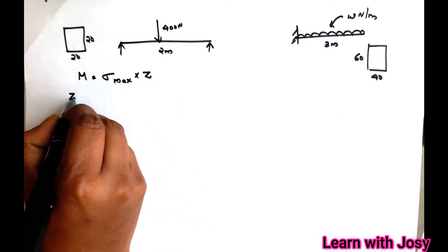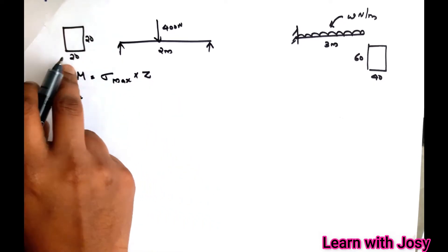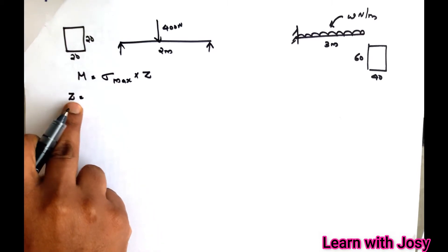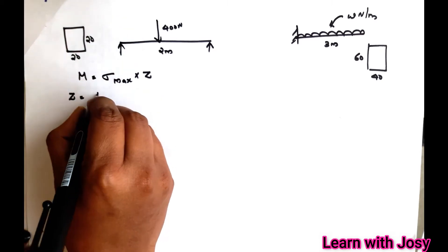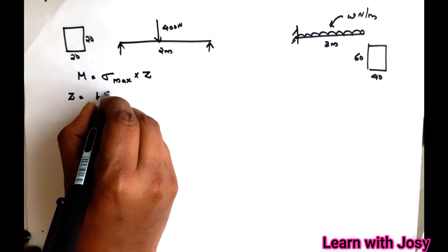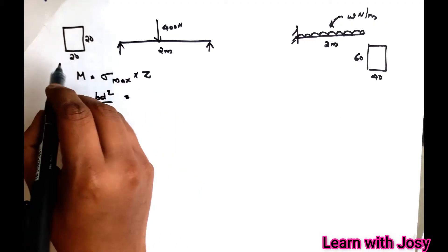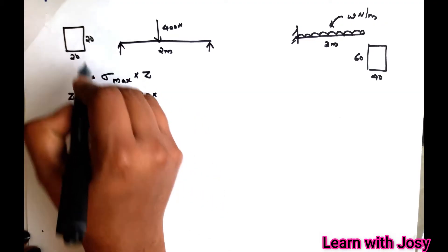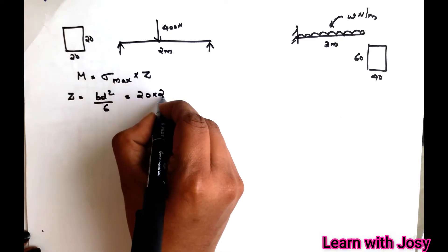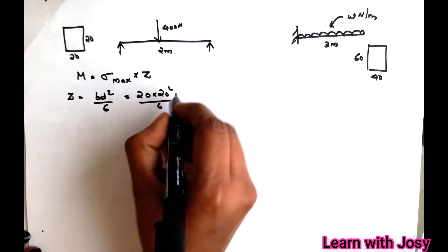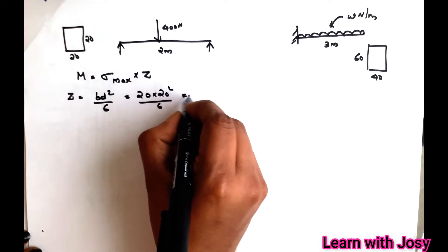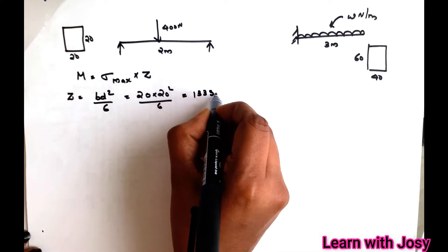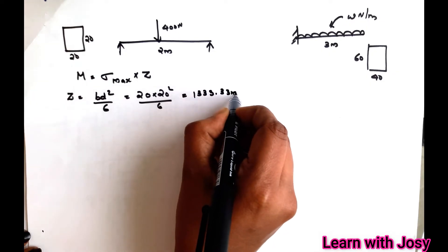First, let's calculate Z — the section modulus. The equation is Z = bd²/6. Here, B is 20 mm and depth is 20 mm. So Z = 20 × 20² / 6 = 133.33 mm³.